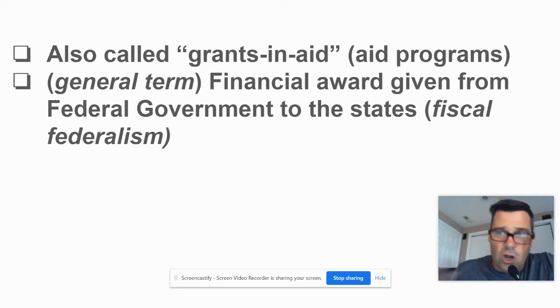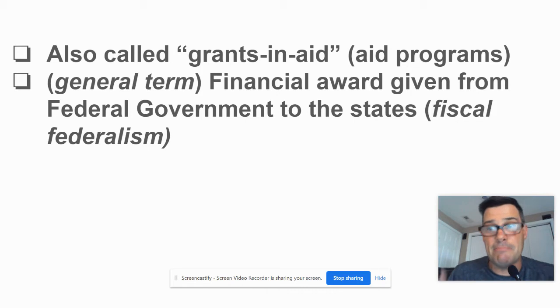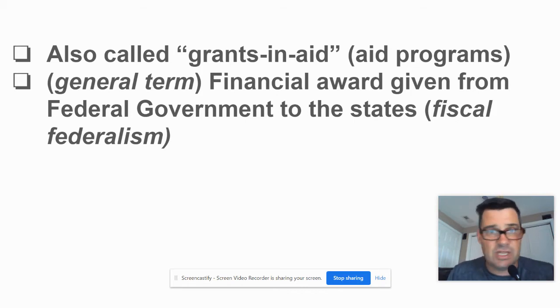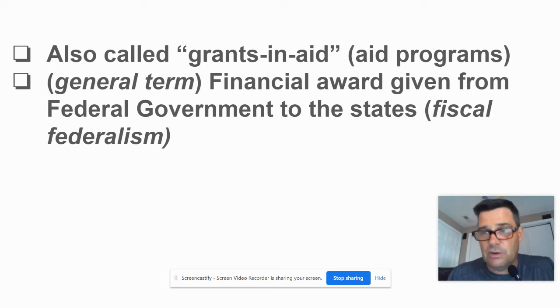By the way, this is also called fiscal federalism, as I mentioned earlier, because fiscal has to do with money. So fiscal federalism means how does the relationship between the federal government and the states get balanced out — and they're going to use money to do it.